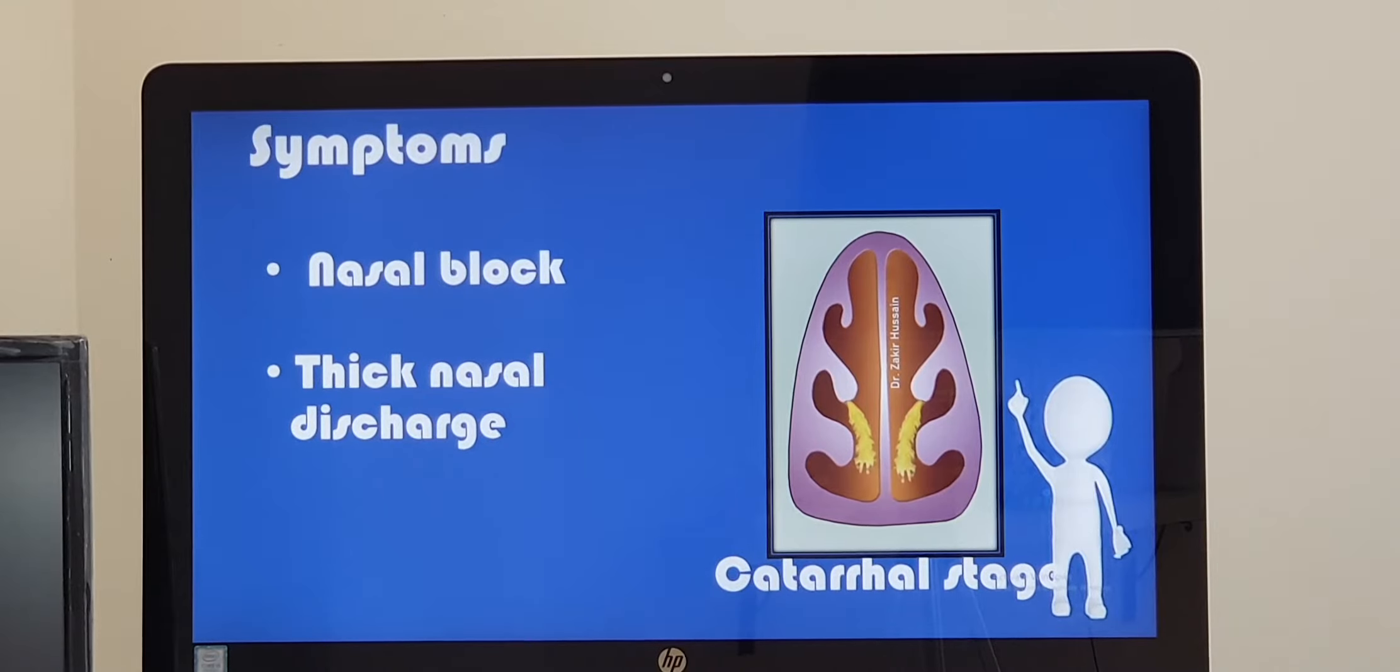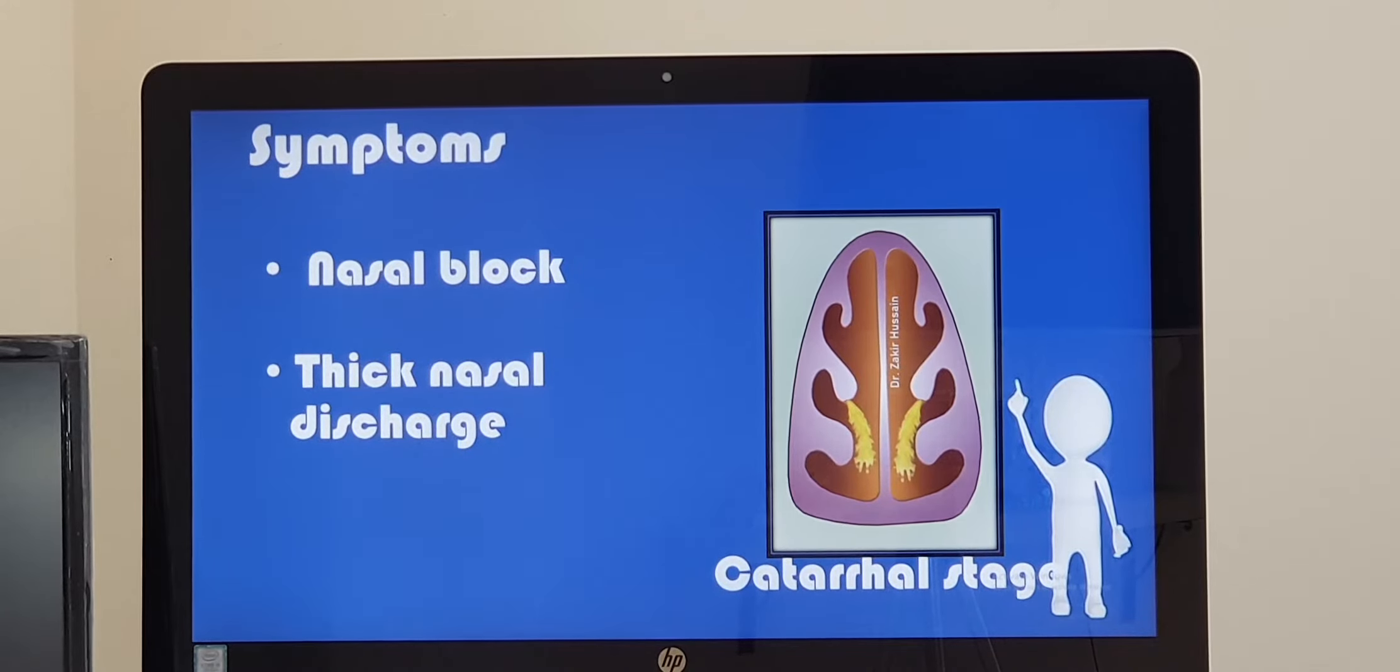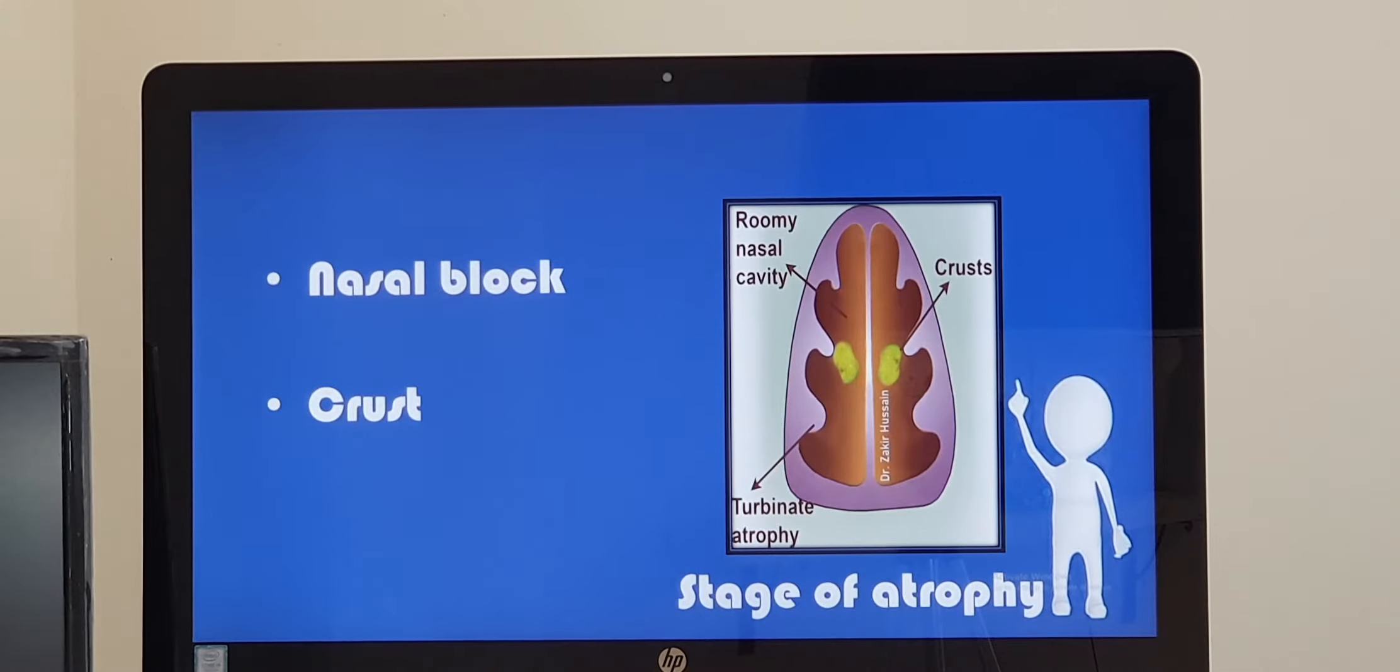Coming to the patient complaint, all four stages you have nasal block which keeps on increasing. And the first stage specifically, you have thick nasal discharge, thick mucoid discharge. They say that it comes out like that. And the second stage, they have crust formation.